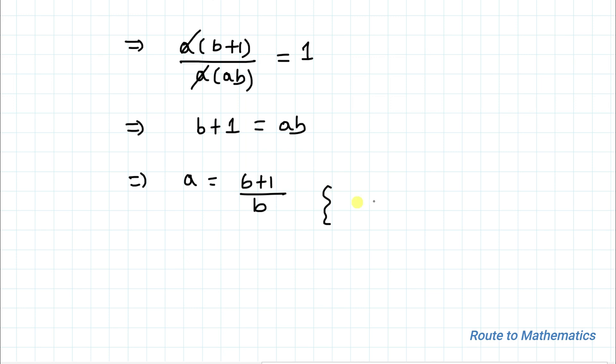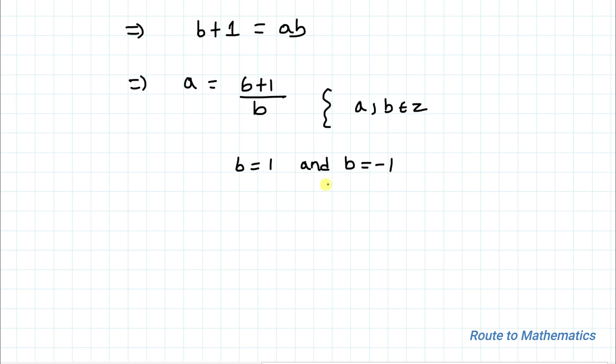As in the question it is given that a and b both are integers, so in order to satisfy the equation the only values of b possible are b = 1 and b = -1. So these two integer values are satisfying the given equation.